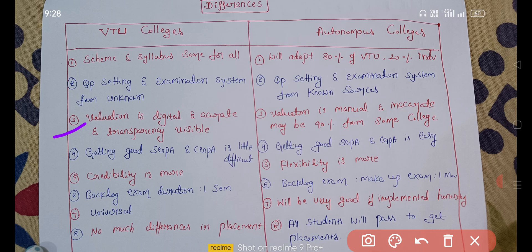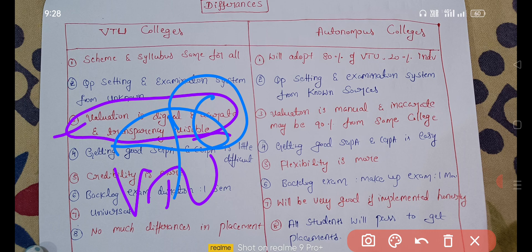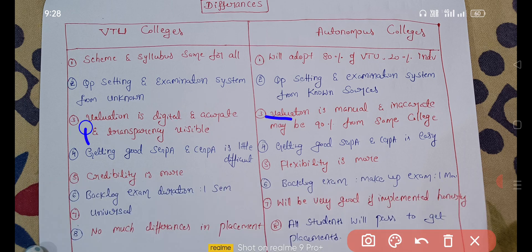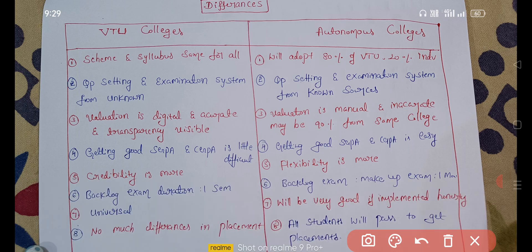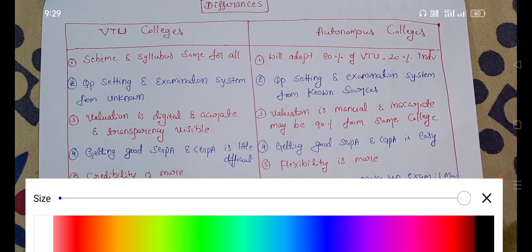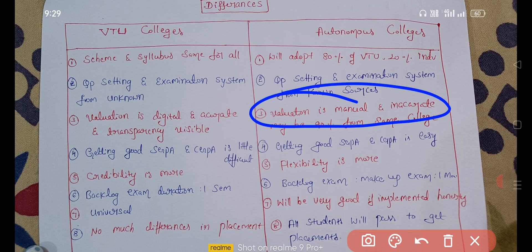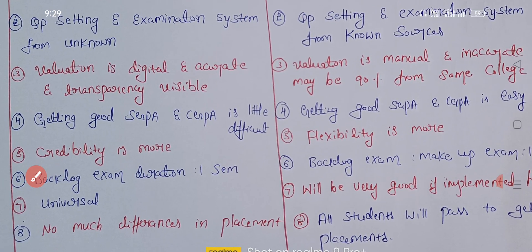The third point is about valuation. In VTU, valuation is fully digital, accurate, and transparent. But in autonomous colleges, valuation may not be as fair, since approximately 90% of the time the valuators are from the same college, which may affect the reliability of the valuation.